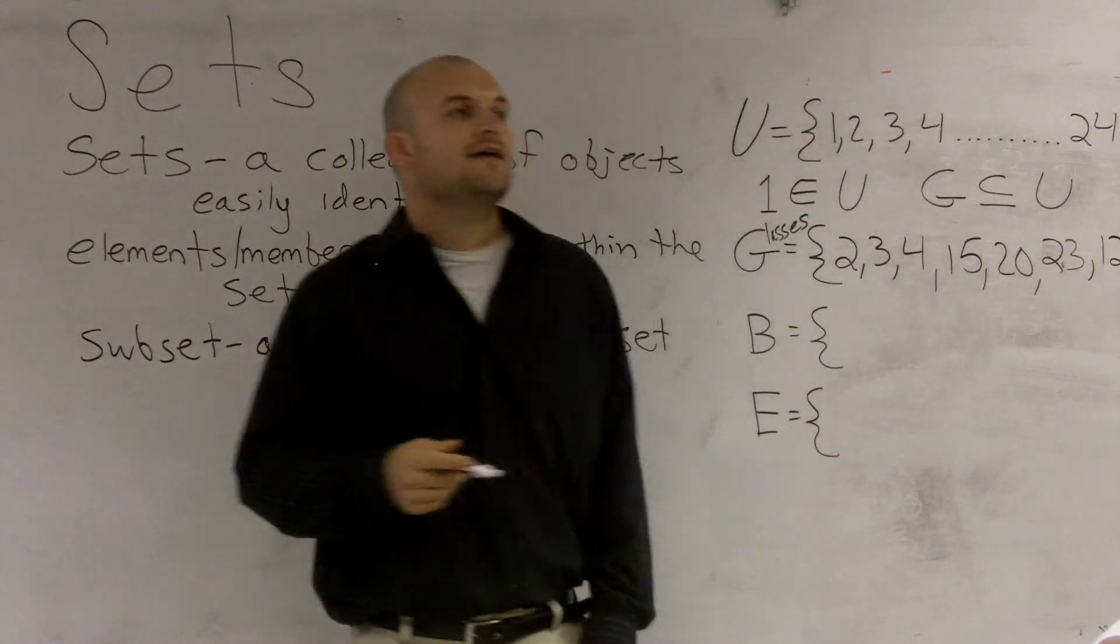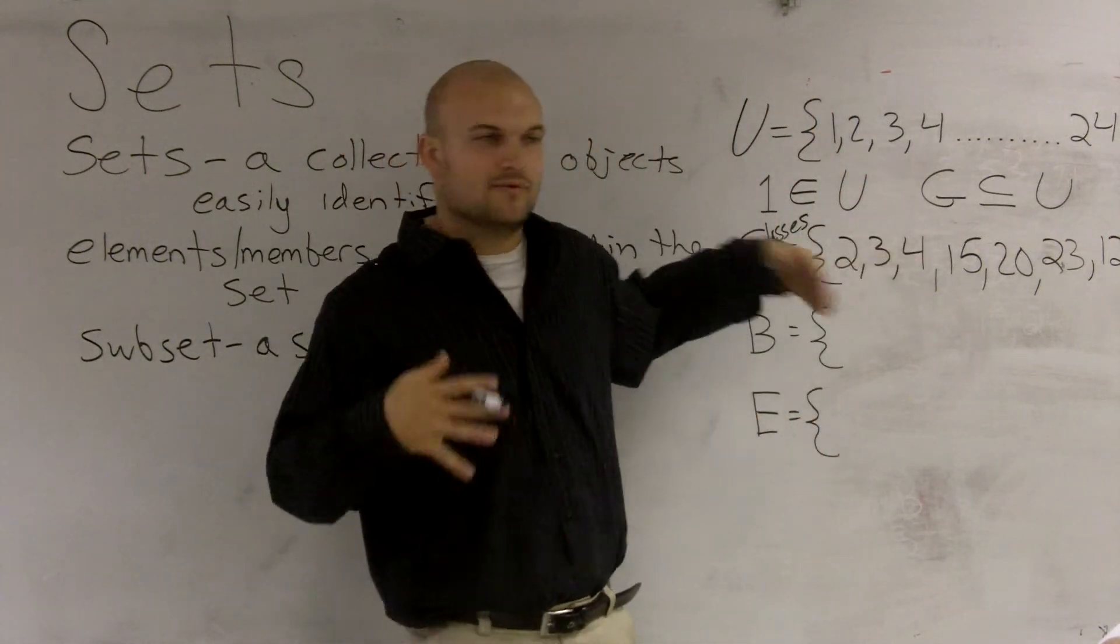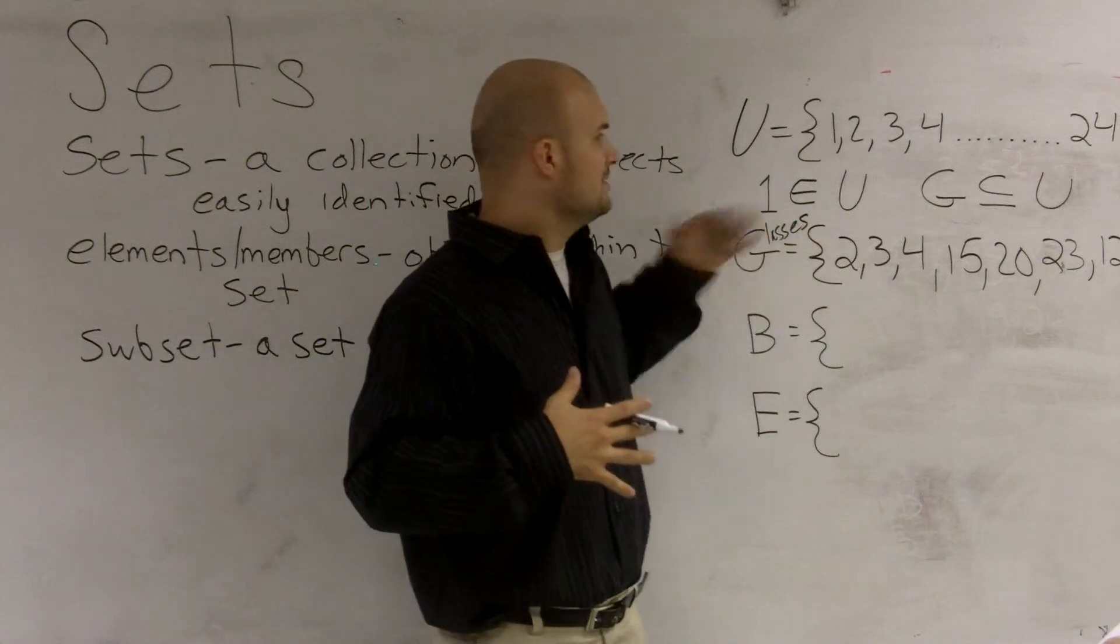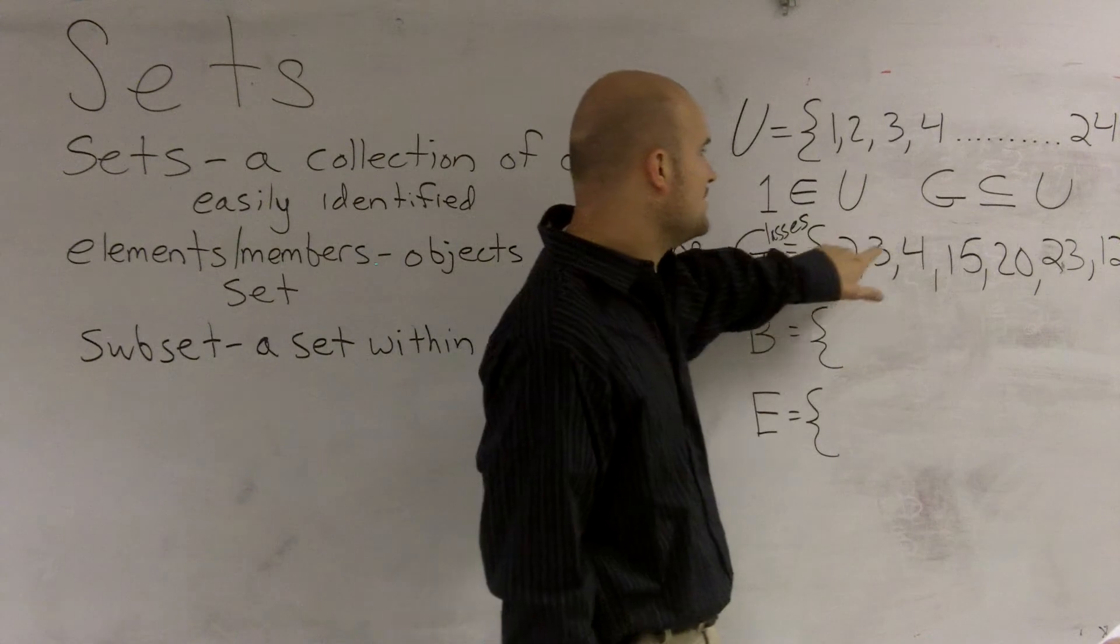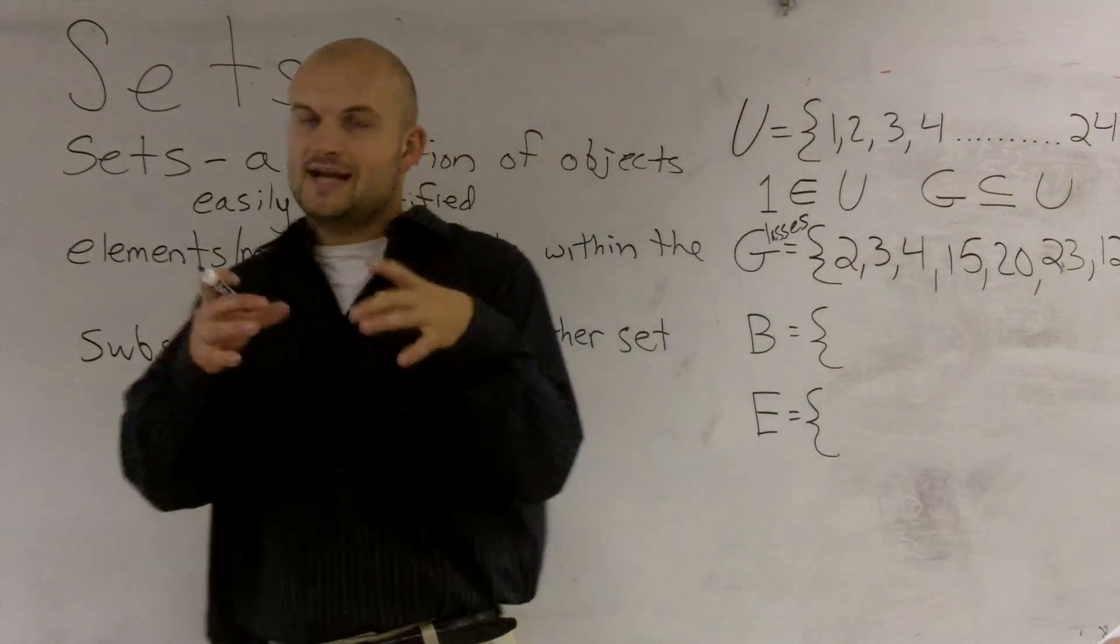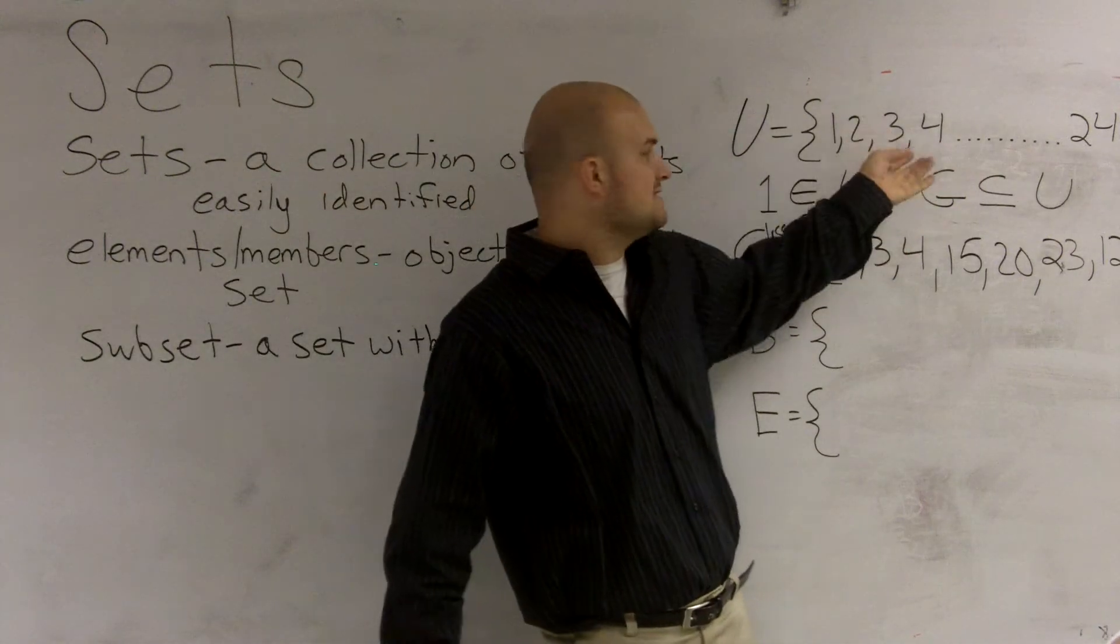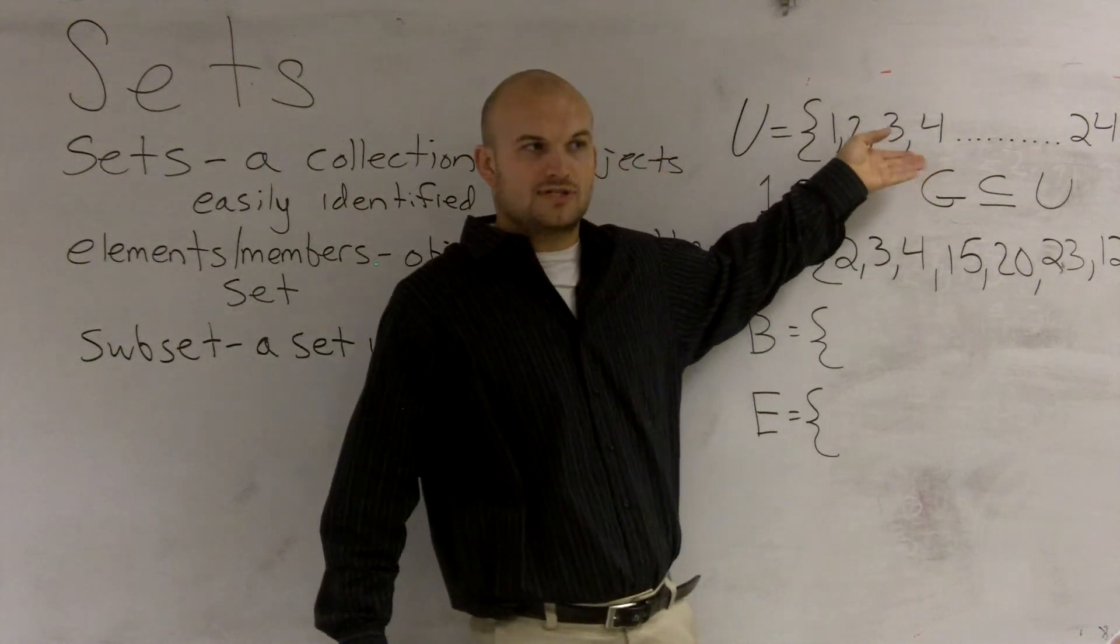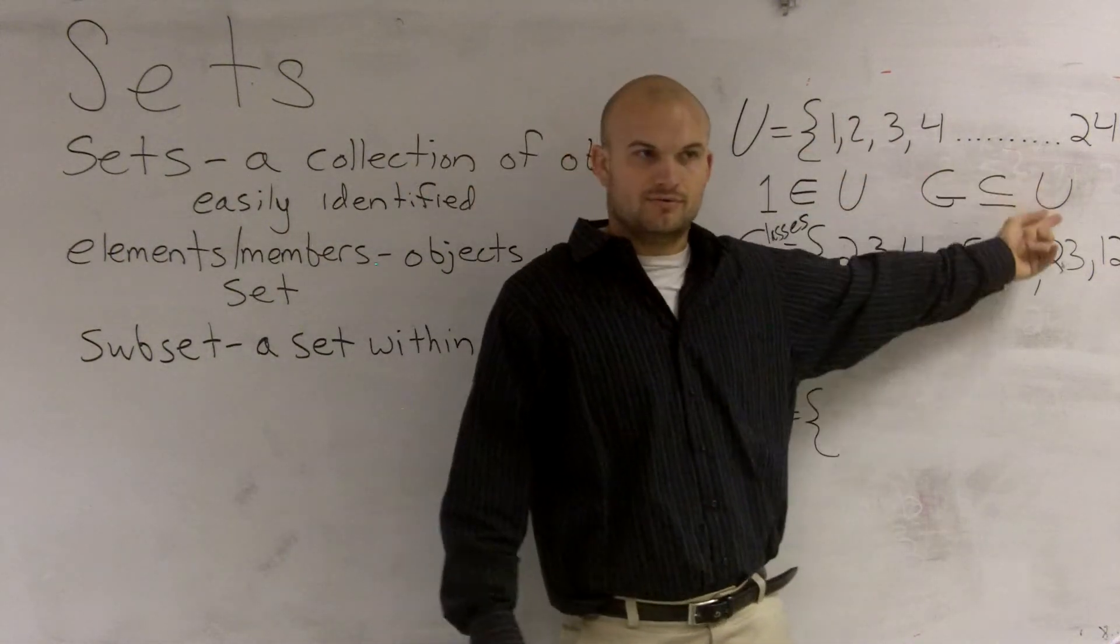Usually, we like to go ahead and have our objects in order. But they don't have to be in order, but we prefer, as math people, to have everything in order. So, how many elements do we have in this set? We have 1, 2, 3, 4, 5, 6, 7 elements. So, that is a subset. Every element inside of G is still inside of U, correct? Our universal set. So, what we say is G is a subset of U.